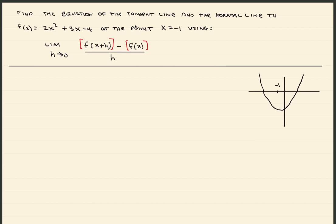Here's the problem. I want to find the equation of the tangent line and the normal line to this function at the point x is equal to negative 1, using the limit definition. First of all, let's get a picture of what it looks like. If you were to graph this function, it would look like this little curve right here.